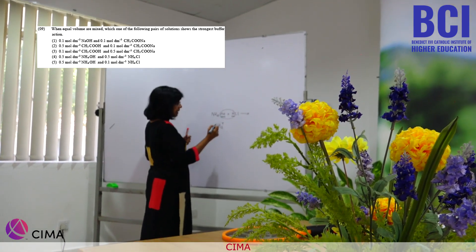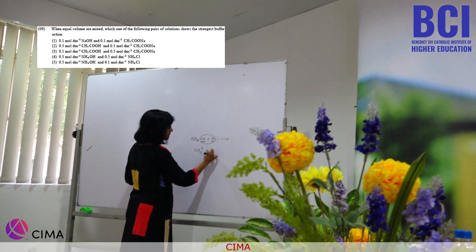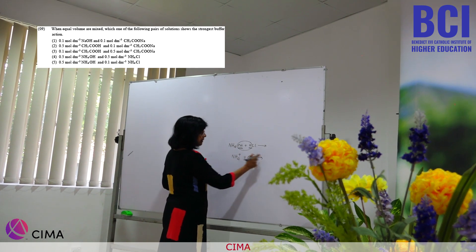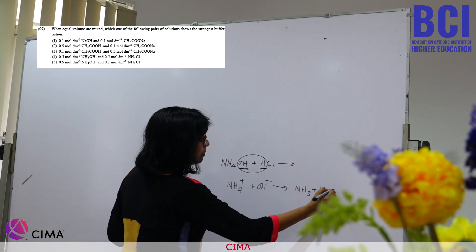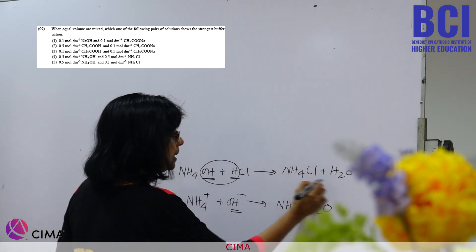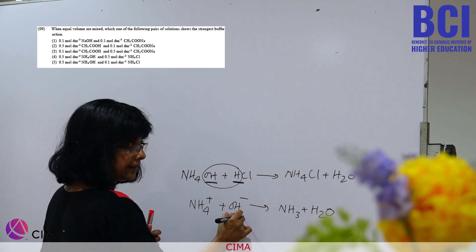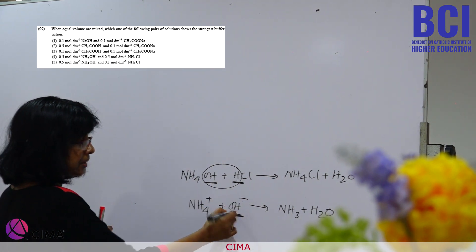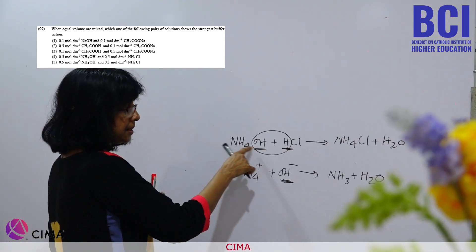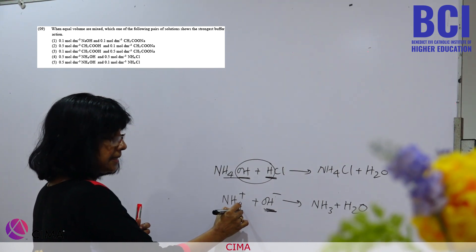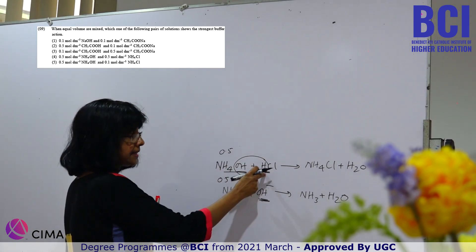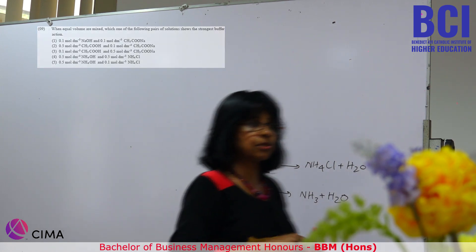In the ammonium buffer, ammonium hydroxide is present to neutralize added acid. When base is added, ammonium ions react with it, producing ammonia and water without changing pH significantly. The high concentration of both species means they can handle large amounts of added acid or base, making it a good buffer.